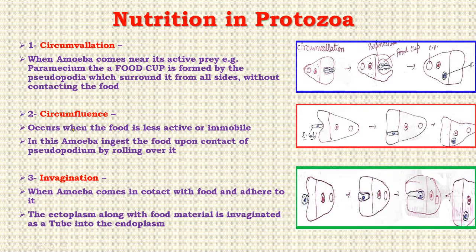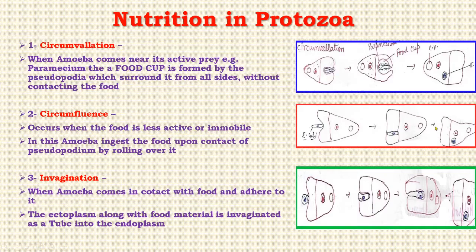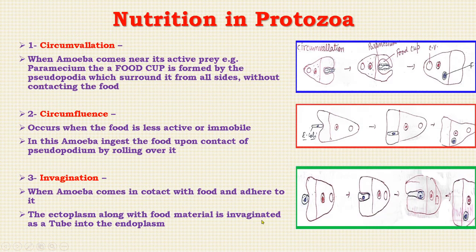Circumfluence occurs when food is less active or immobile. In this, amoeba ingests the food upon contact of pseudopodium by rolling over it, and the protoplasm flows and ingests the food organism in a food vacuole by infolding the cell envelope. The third type is invagination: when amoeba comes in contact with the food and adheres to it, the ectoplasm along with food material is invaginated as a tube into the endoplasm. This is found in Amoeba varicosa.